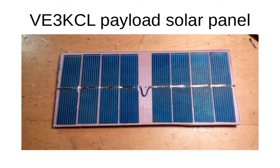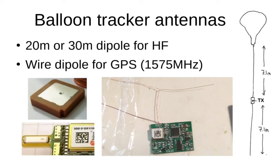Here is an example of one of the solar panel arrangements that Dave VE3KCL used on his flight — in this case a series of eight solar panels. These solar panels are incredibly fragile, very thin glass and quite difficult to solder together. Dave mounts them on pink polystyrene insulation material. The antennas we use are typically dipole antennas for the HF side. The easiest way is to have the transmitter at the middle of the dipole directly feeding the dipole legs, with one end tied to the balloon and the other end hanging down freely.